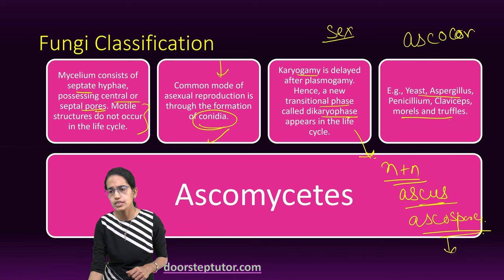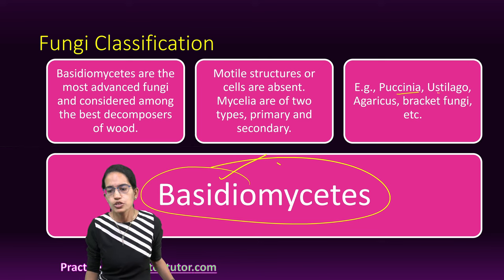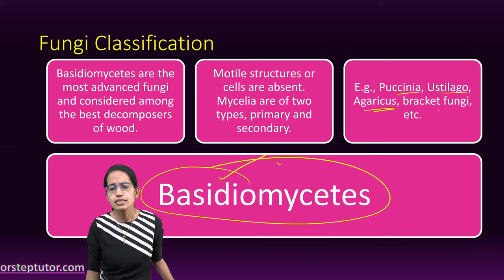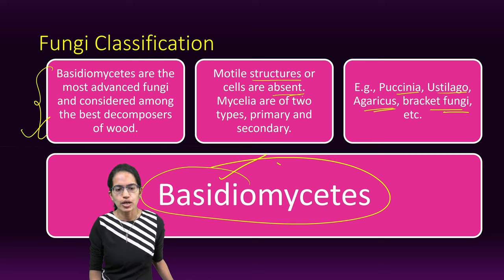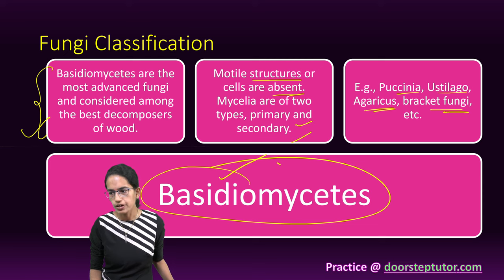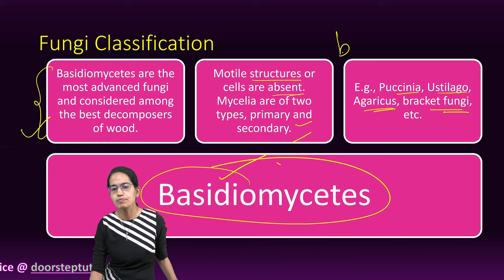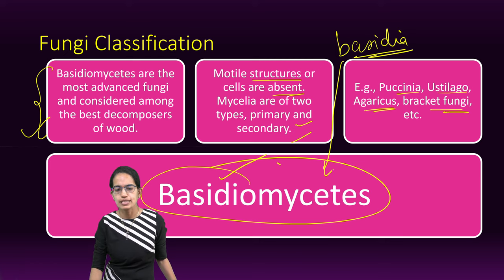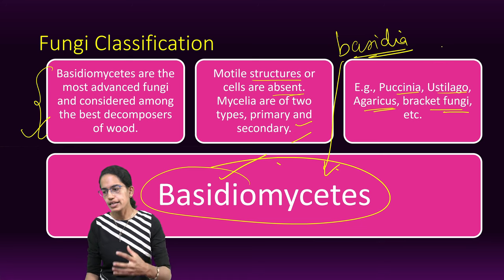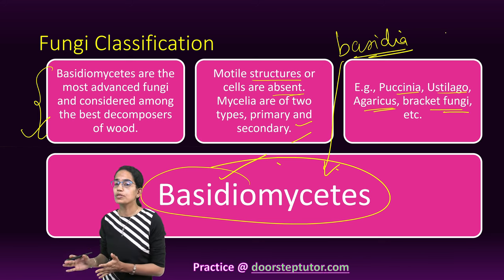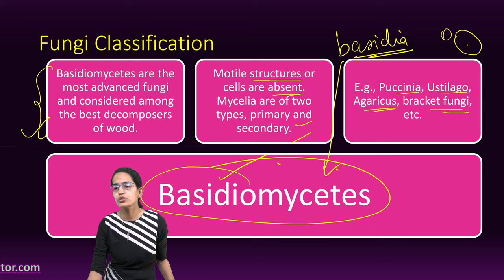The next is Basidiomycetes. Good examples are Puccinia, Ustilago, Agaricus, and bracket fungi. These are the most advanced and the best decomposers of wood. They don't have any motile structures. The mycelium is either primary or secondary. Karyogamy is delayed by plasmogamy. Karyogamy and meiosis occurs in club-shaped structures known as basidia, which produce four basidiospores. The fungi may or may not produce fruiting bodies called basidiocarps, which can be microscopic or macroscopic.